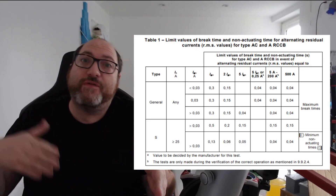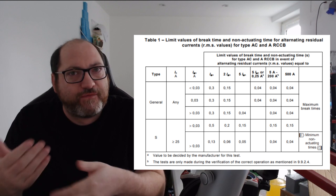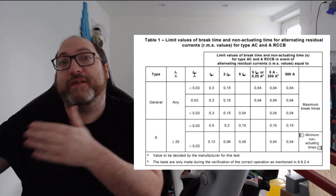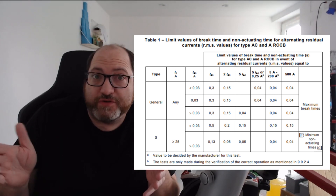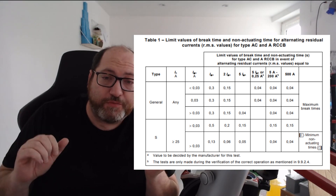BSEN 61008, which is the standard for RCCBs or RCDs, had an update in 2017 and it introduced the option for manufacturers to have a 0.25 amp or 250 milliamp test current to verify instantaneous disconnection. So instead of the times one, times five scenario we are familiar with — times five for a 30 milliamp being 150 milliamp — there was an introduction that said they could have 250 milliamp as an option.